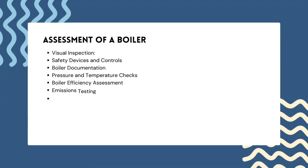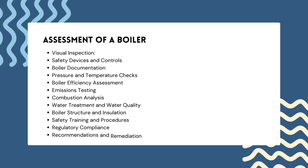The assessment of a boiler is a critical process evaluating its condition, performance, safety and compliance with regulations. Regular assessments are essential to ensure efficient and safe operation. Key steps include: first, visual inspection — beginning with a visual inspection of the entire boiler system including the boiler itself, associated equipment and safety devices. Look for signs of damage, corrosion, leaks and worn-out components, and check for proper labeling of critical components.